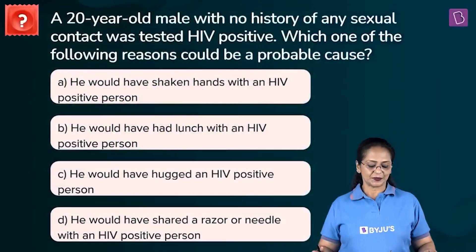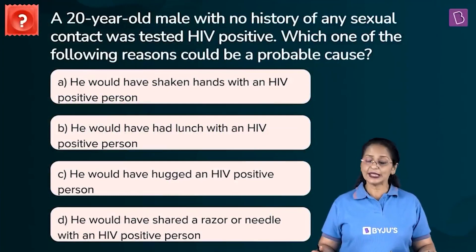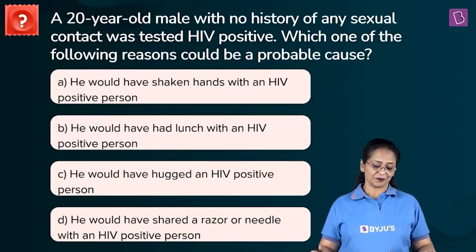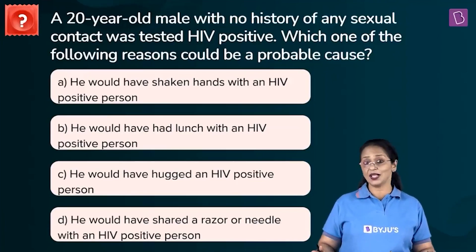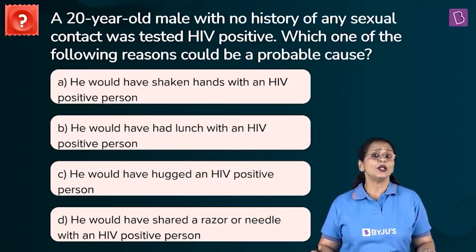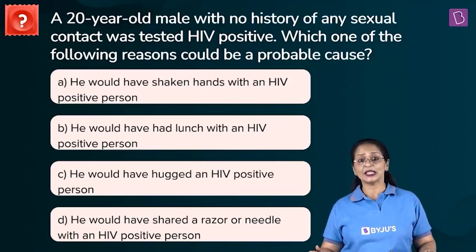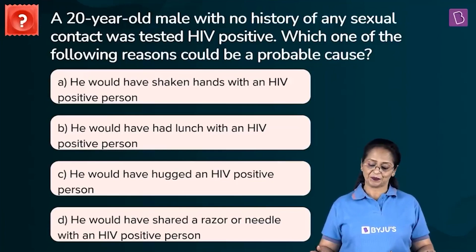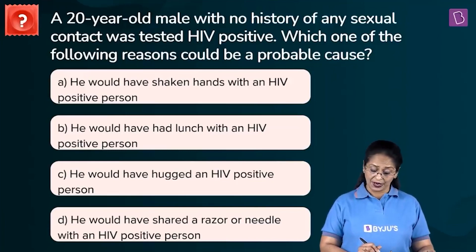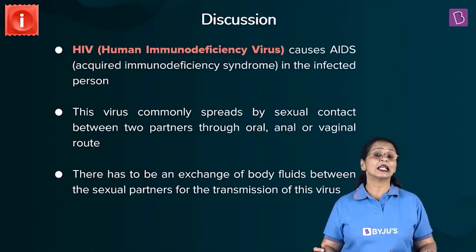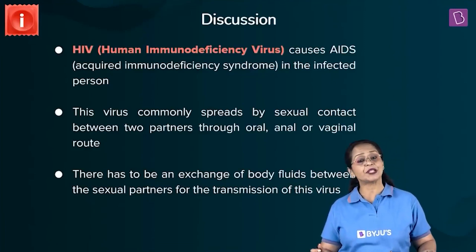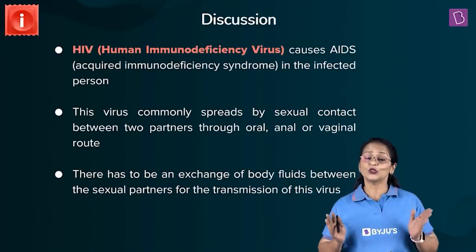Next question: a 20-year-old male with no history of any sexual contact was tested HIV positive. Which of the following could be a probable cause? a) He shook hands with an HIV-positive person, b) he had lunch with one, c) he hugged one, or d) he shared a razor or needle with an HIV-positive person. HIV is the pathogen that causes AIDS — acquired immunodeficiency syndrome.